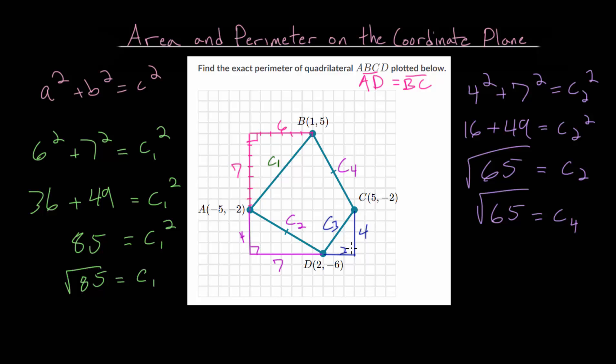So you might recognize this one. This is a Pythagorean triple, the 3-4-5 right triangle. If you don't remember that, just use the Pythagorean theorem. But this is the simplest right triangle where the side lengths are all whole numbers. So this is an important one to remember.